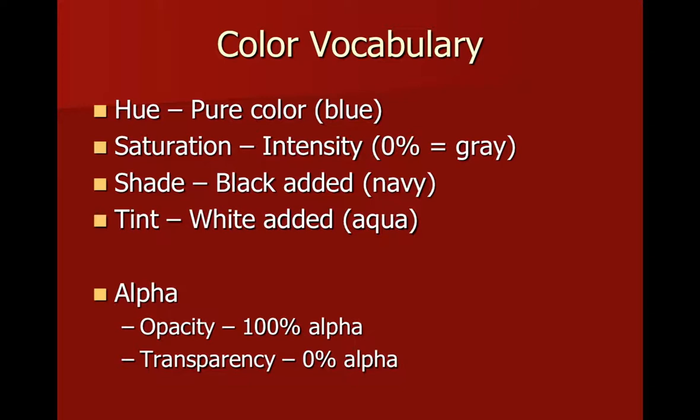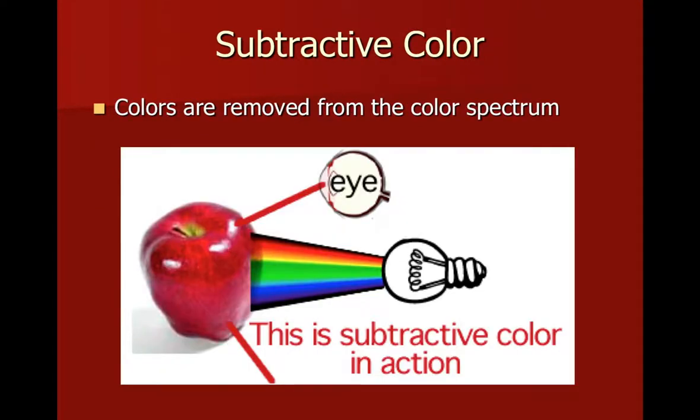Now there's two types of color theory we need to talk about. The first is subtractive color theory. This is how color in the real world works. In the real world you have a light source, whether that's the sun in the sky or a light bulb in the room, and it's projecting white light. You'll notice in our graphic here our white light actually contains all the colors in the rainbow. That's because each color is a different wavelength and all those wavelengths combined create white light.